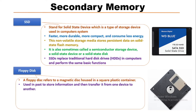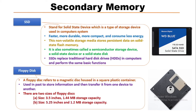The floppy disk was mainly used in the past to store information and transfer it from one device to another. There are two types of floppy disks according to disk size: one is 3.5 inch with 1.44 MB storage capacity, and another is 5.25 inch with 1.2 MB storage capacity. A computer must have a floppy disk drive to use a floppy disk.